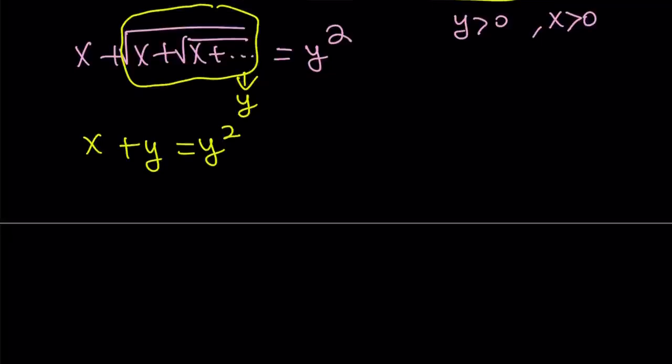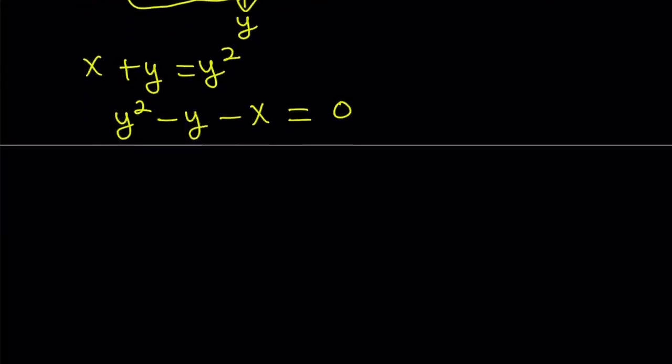Let's put everything on the same side. We want to make a quadratic: y squared minus y minus x is equal to zero. Now, to solve this quadratic, let's use the quadratic formula. We're going to get y equals negative b plus or minus the square root of b squared, which is 1, minus 4ac, which is 4x, and then divide it by 2.